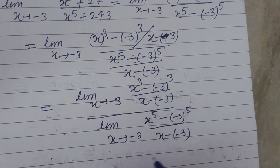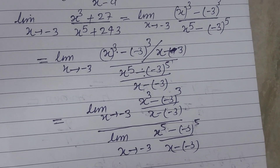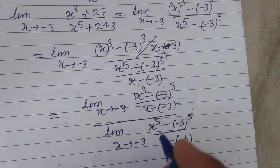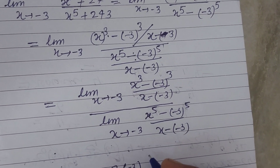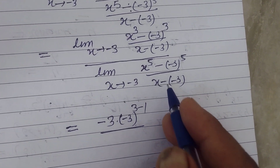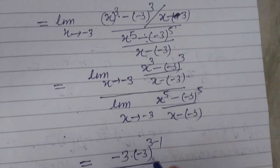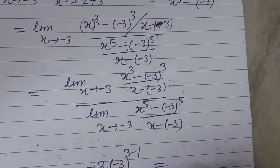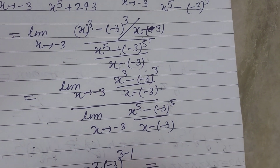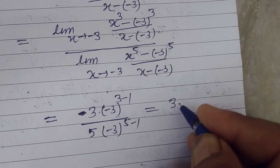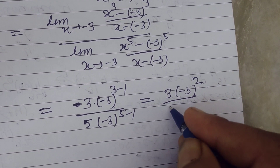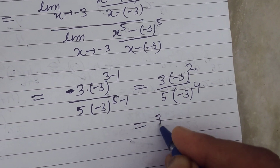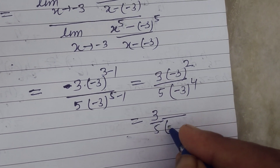Using the standard result, the numerator gives 3 times (minus 3) to the power 3 minus 1, which is 3 times (minus 3) squared. The denominator gives 5 times (minus 3) to the power 5 minus 1, which is 5 times (minus 3) to the power 4.